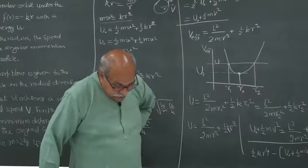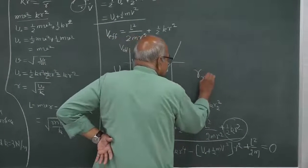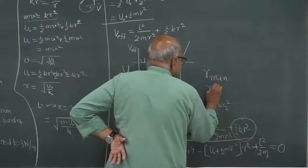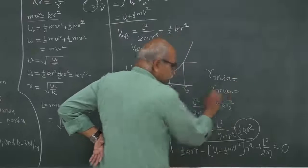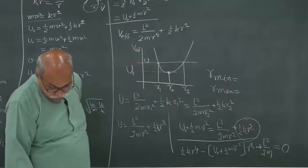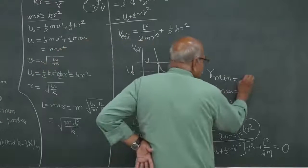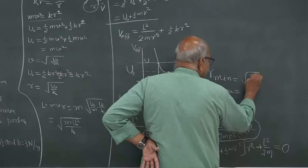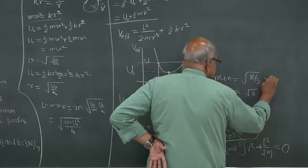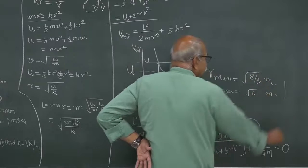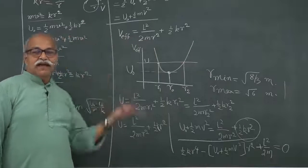If you do it correctly you should get r_min equal to the square root of 8/3 and r_max equal to the square root of 6 meters. That is how you obtain these values.